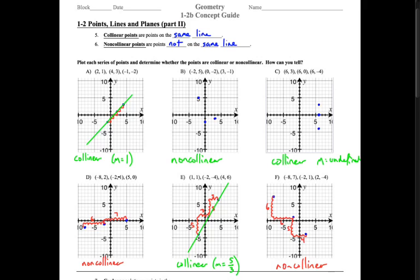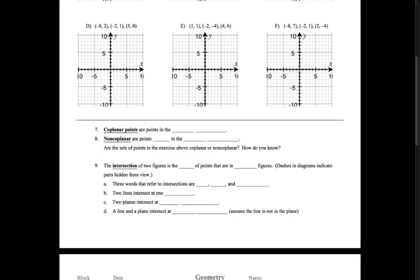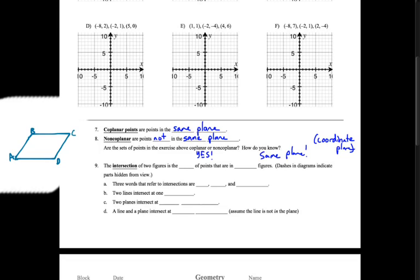So obviously, if lines are on the same line, then they're collinear, but we're talking about on a coordinate plane. In order to be on the same line, they have to have the same slope, okay? Some other terms. Coplanar points are points in the same plane, just like the same line. And non-coplanar points are ones not in the same plane.